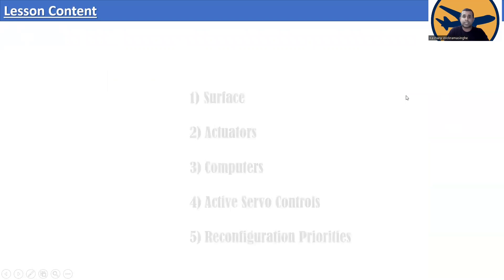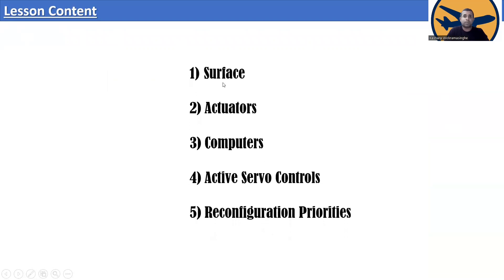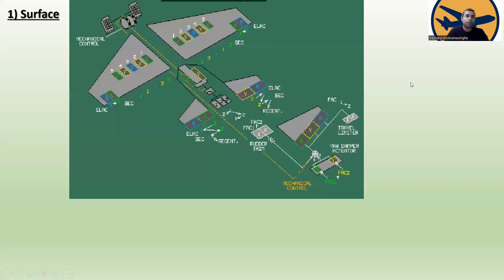Now let's go to the lesson outline. Number one: surfaces. Number two: actuators. Number three: computers. Number four: active servo controls. Number five: reconfiguration priorities. Let's go to number one — surfaces.